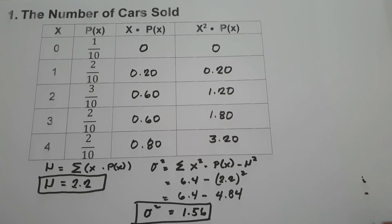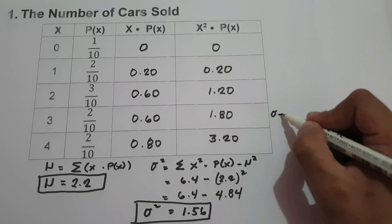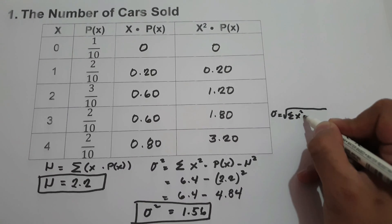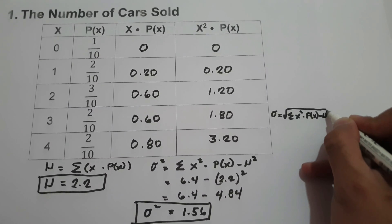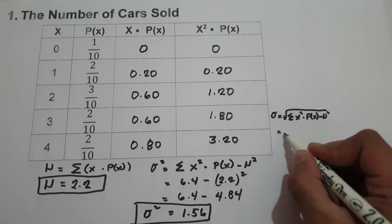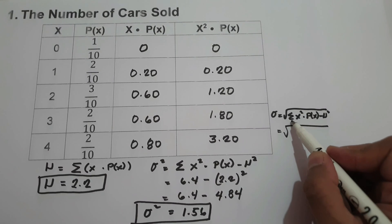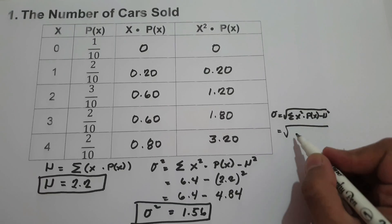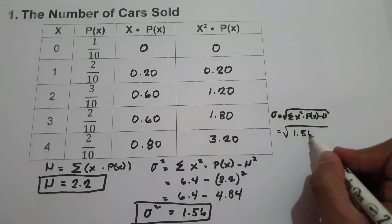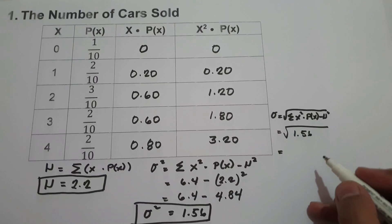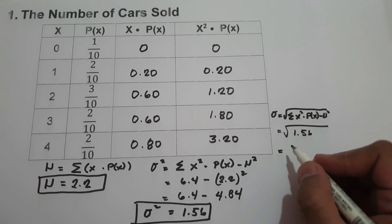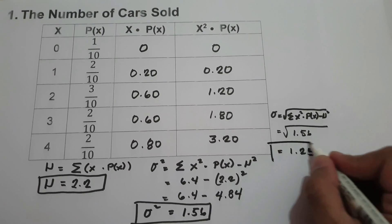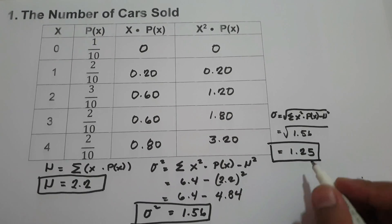To find the standard deviation, we use the formula: square root of the summation of x squared times p(x) minus mean squared. The value of that expression is 1.56, and the square root of 1.56 is 1.25. So 1.25 is our standard deviation.